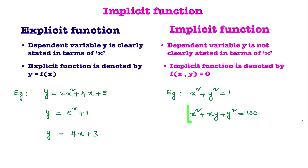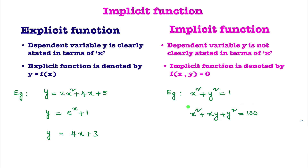Observe this next example. By seeing this equation, is dependent variable y clearly stated in terms of x? No. In this equation, two variables x and y are present. So this is an example of an implicit function, where y is not clearly stated in terms of x.